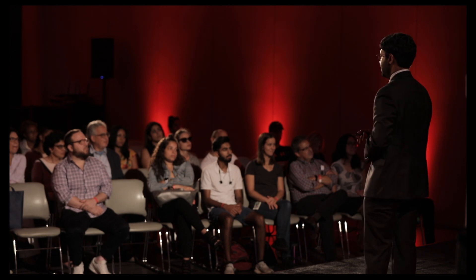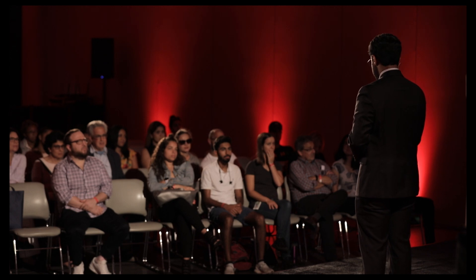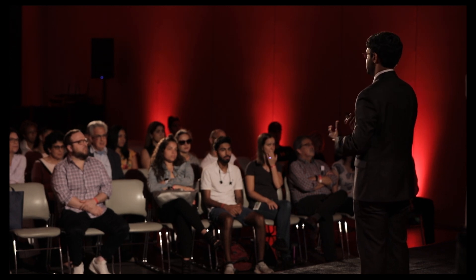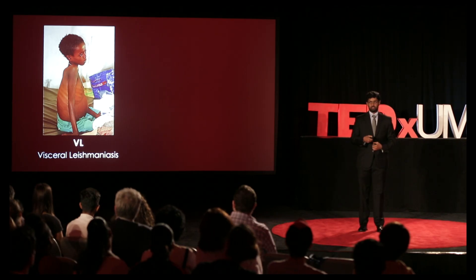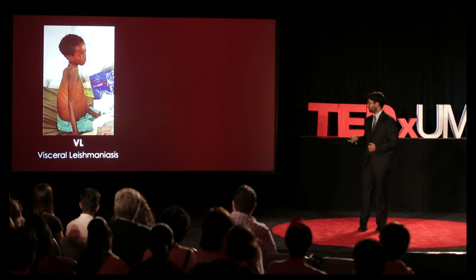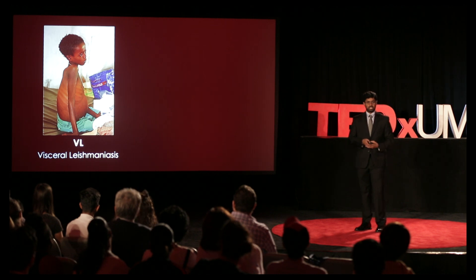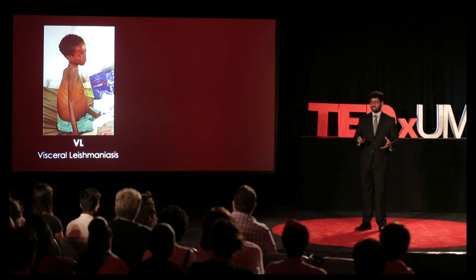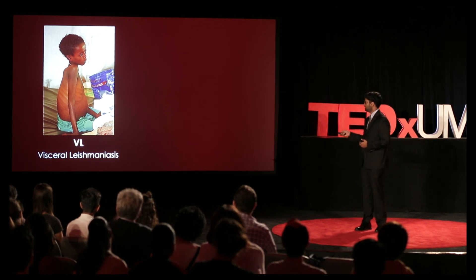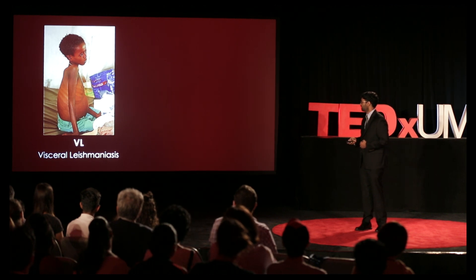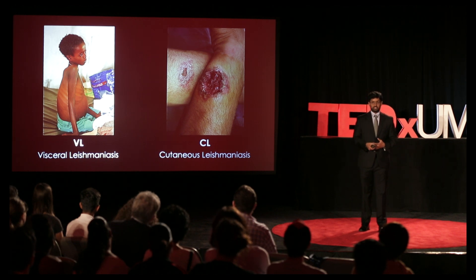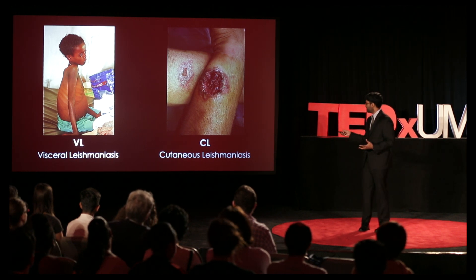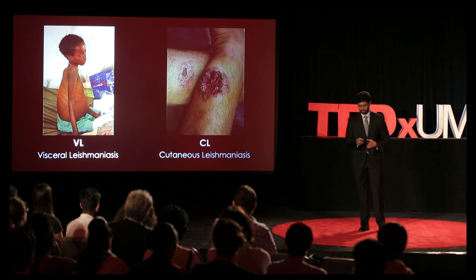Fair warning — the images on the following slide might be disturbing to some viewers. There are two forms of Leishmaniasis. Visceral Leishmaniasis, or VL, is characterized by enlargement of the spleen and liver, collectively referred to as hepatosplenomegaly. As you can see, this young boy's midsection is totally distended by his enlarged liver. Then there's cutaneous Leishmaniasis, or CL, which is marked by large open wounds on the skin.